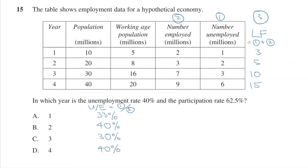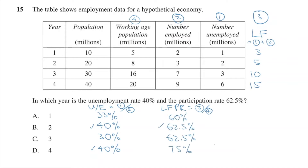With years 2 and 4 both being 40%, the answer is either B or D. Now let's look at the participation rate. This is calculated by dividing the labor force by the working age population. By doing this, we'll find that years 2 and 3 both have a participation rate of 62.5%. With this, we know that the answer is B.